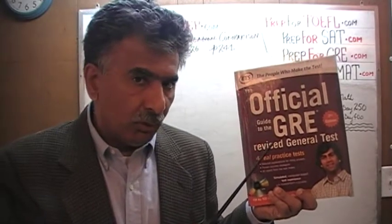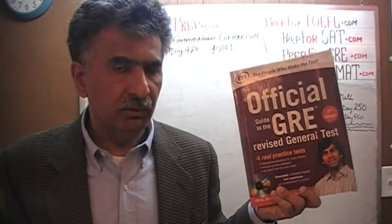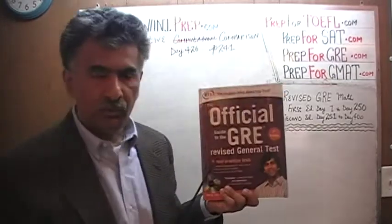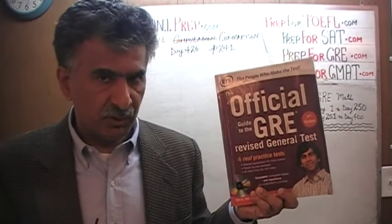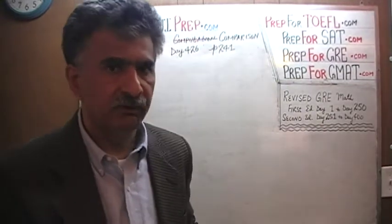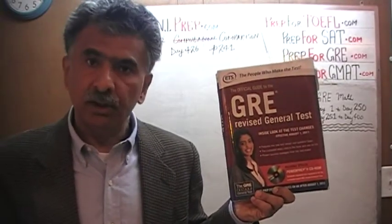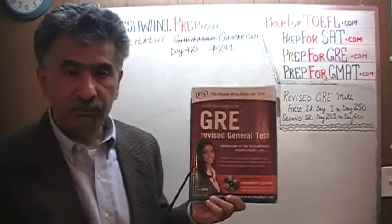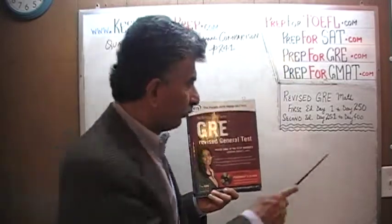We have almost finished doing all the math problems from this book. If there is any problem that gives you trouble and you want to watch the solutions, you will find them from day number 251 to 400. Over 90% of the problems in this book are the exact same problems appearing on the exact same page numbers as the ones in the first edition of the revised GRE. You will find the original solutions from day number 1 through 250.